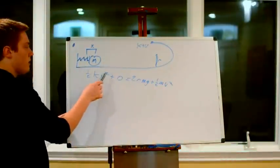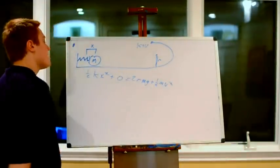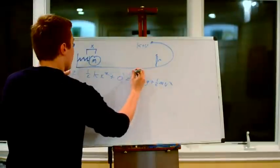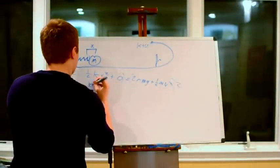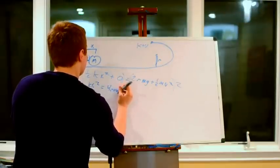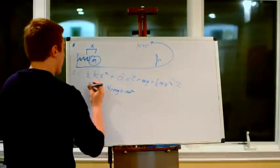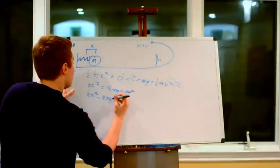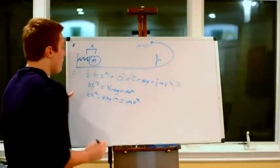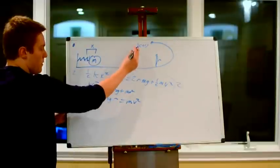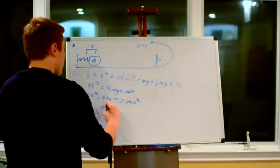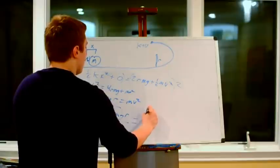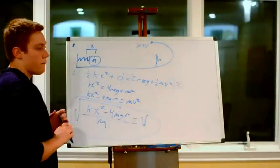Now going variable by variable: we know k, x, r, m, and g, but we don't know v. We need to isolate velocity. First, multiply both sides by 2 to eliminate the halves. We get kx squared equals 4rmg plus mv squared. Rearranging: kx squared minus 4mgr equals mv squared. Dividing by m and taking the square root gives us the velocity: v equals the square root of (kx squared minus 4mgr) divided by m. This is the velocity at the top of the loop on a frictionless surface.